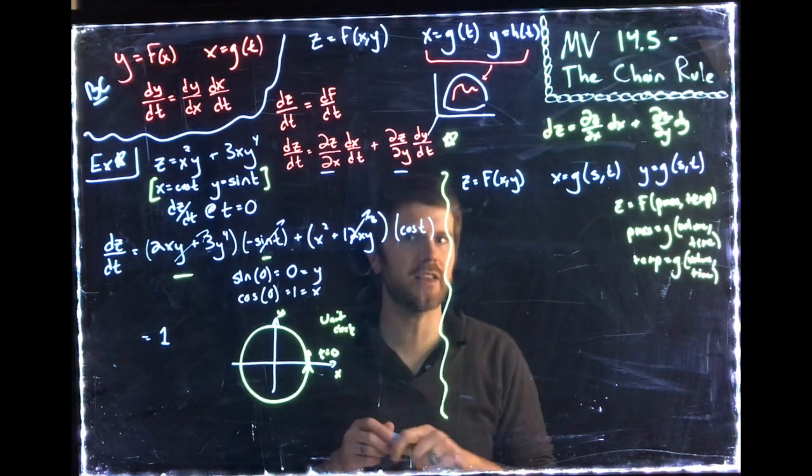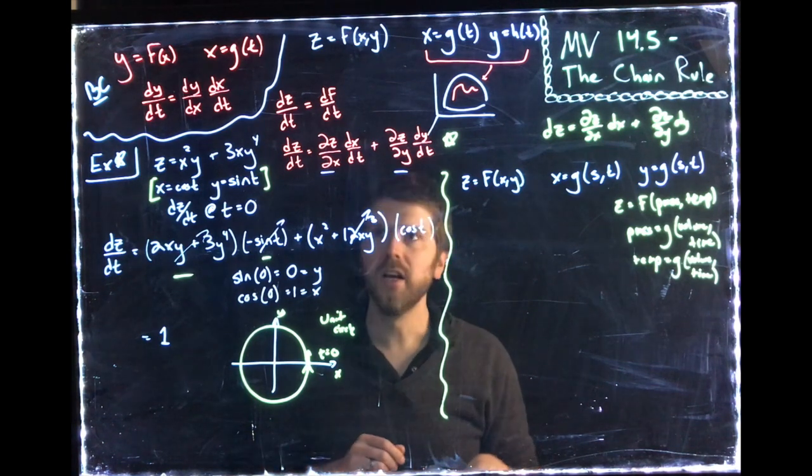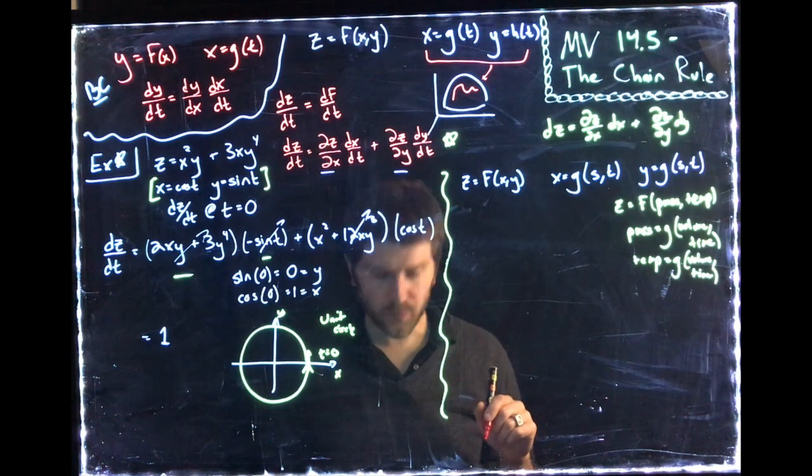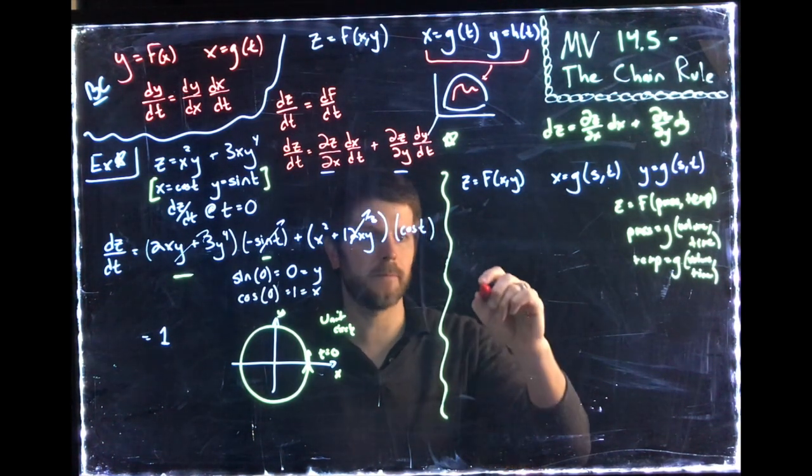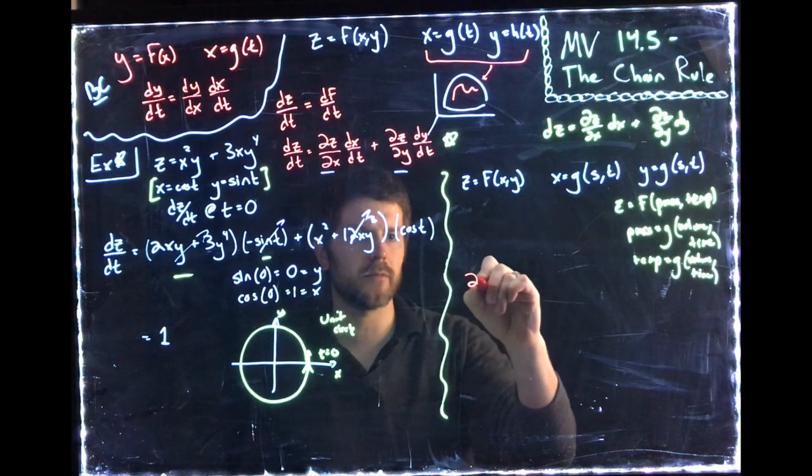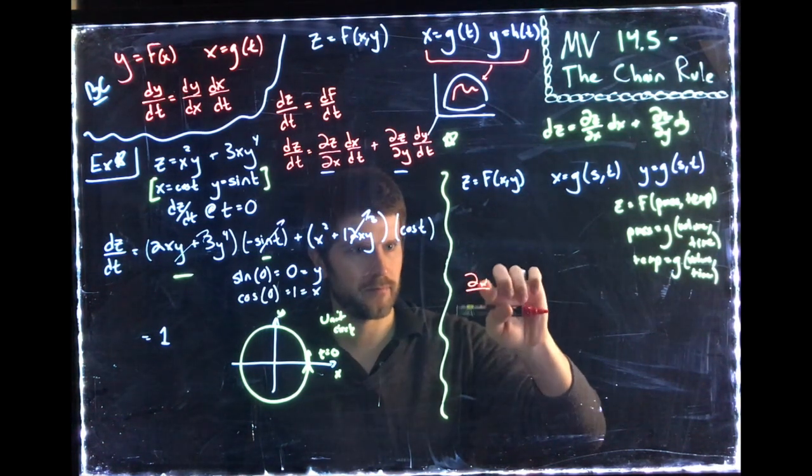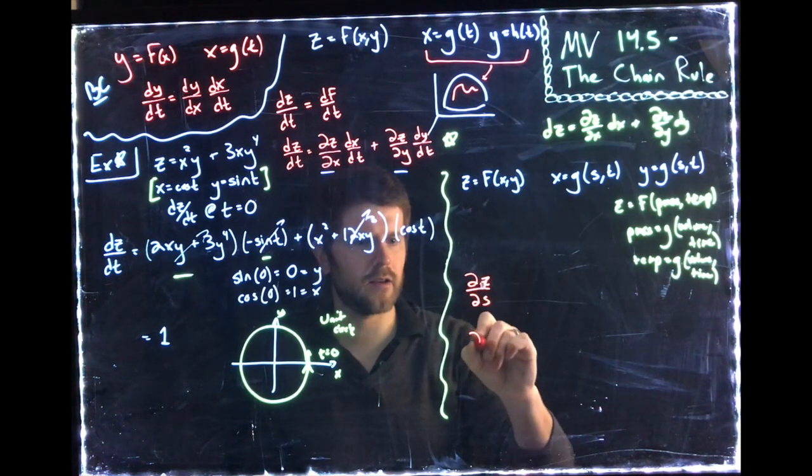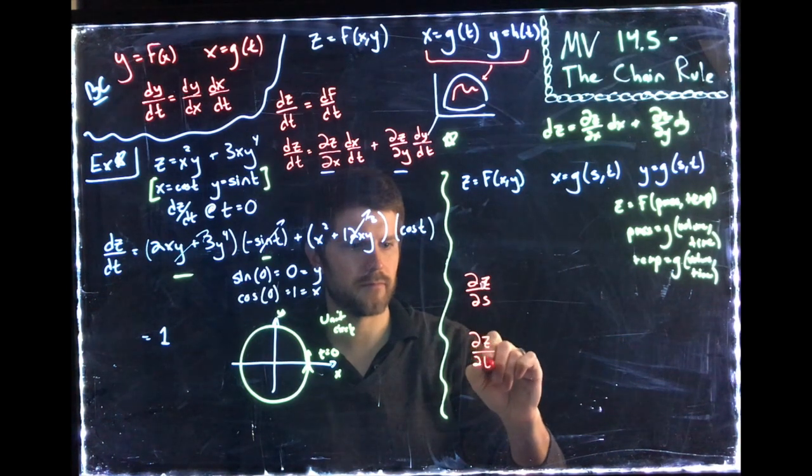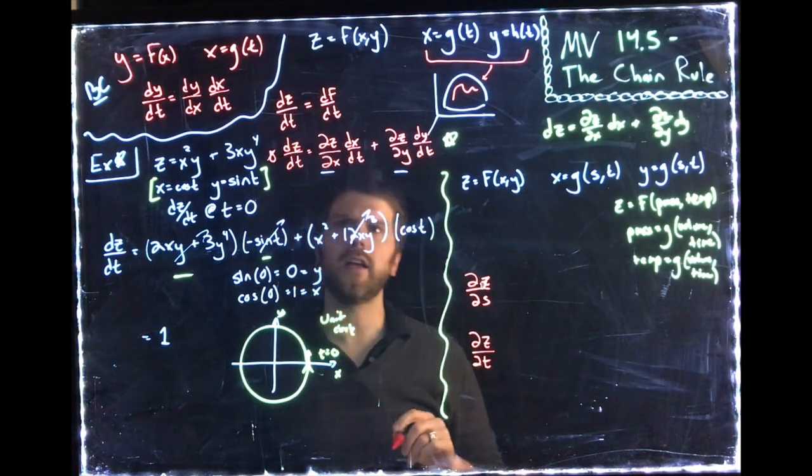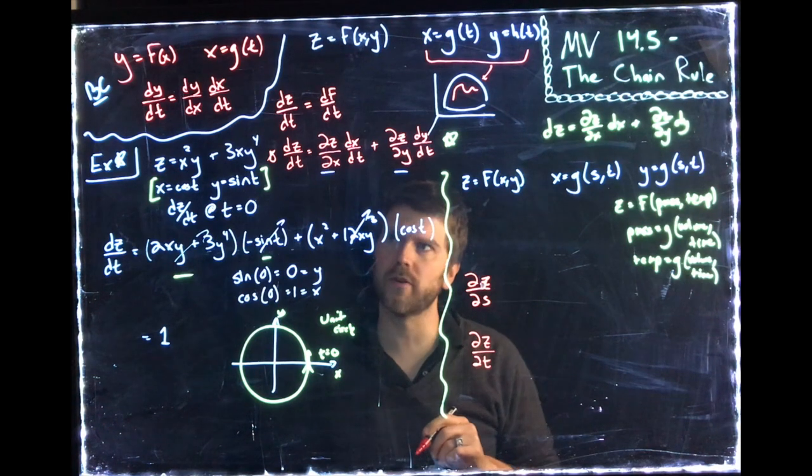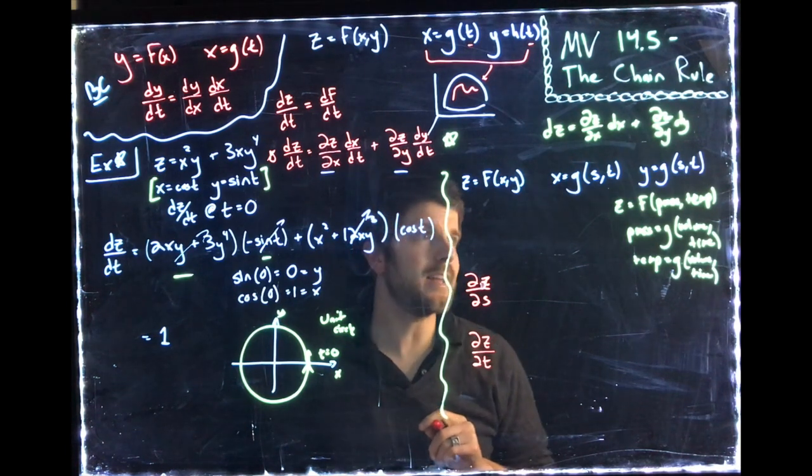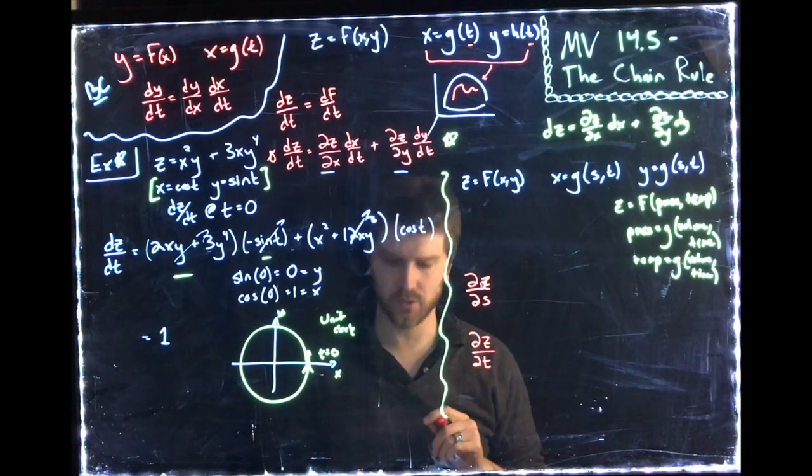Now, in this case, it turns out that things don't actually look that different. And we just need to ask ourselves this question now. Well, how does z change with s or t? One thing that's going to be different is that these are now partial derivatives. Where up here, it was a normal derivative because kind of z, in a sense, only ultimately depended on one variable, only depended on t. Now it depends on two variables, s and t. So it's a partial derivative now.